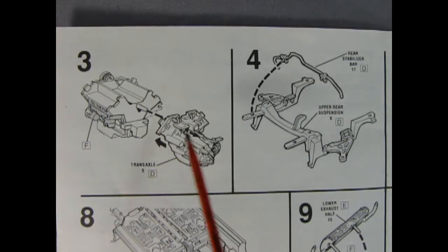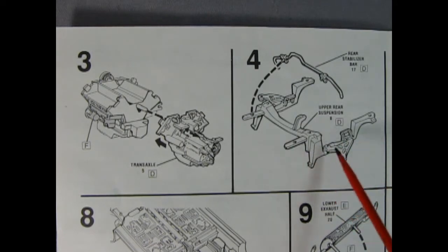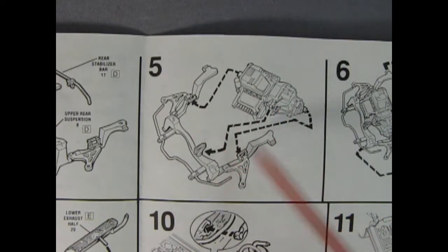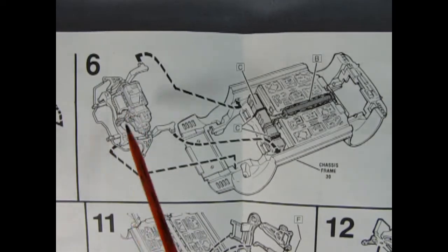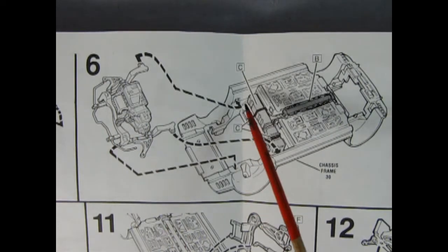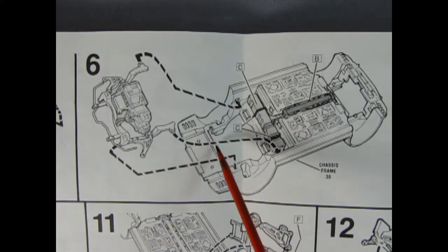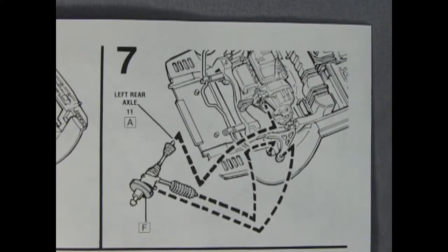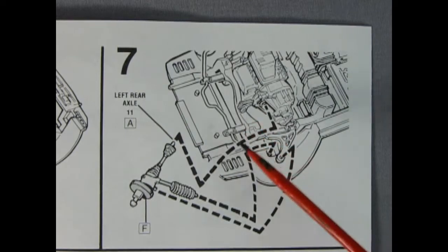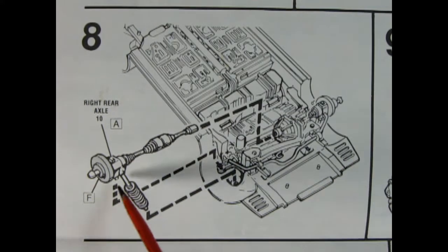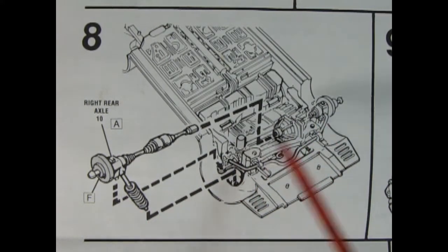Panel three shows our transaxle mounting up onto our engine and panel four shows our rear stabilizer bar going onto the upper rear suspension component. Panel five shows our engine going into the rear stabilizer component. Panel six shows the motor and suspension assembly being popped into the chassis by these two clips off the side and a couple little tabs that drop in here.